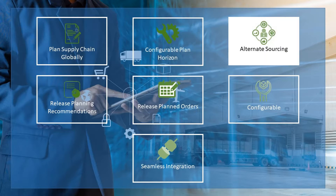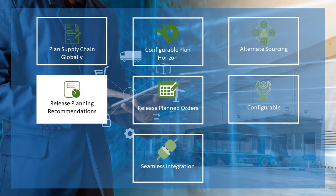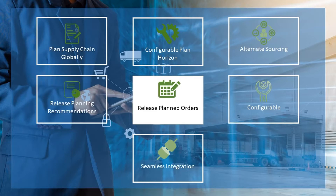Alternate sourcing: update material sources during uncertainties, avoiding stock outs and/or lost sales. Release planning recommendations: release planned orders for execution including mass release across organizations and/or suppliers. Optionally, you can auto-release some or all planned orders, or release planned orders for a supplier or branch on a particular day of the week.